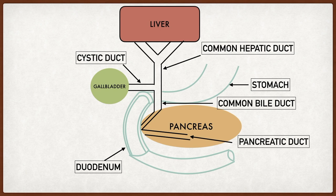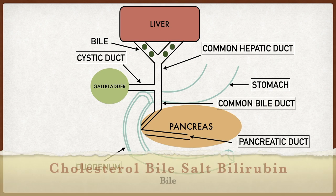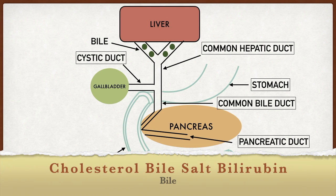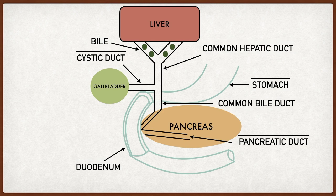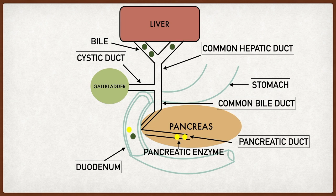Now that we understand the anatomy, let's talk about bile. The liver produces bile, which consists of cholesterol, bile salts, and bilirubin, and releases it into the right and left hepatic ducts. The main goal of bile is to help break down food, specifically fats. Some bile travels through the hepatic ducts, through the common bile duct, and empties into the duodenum to help digest food. The pancreas also releases pancreatic enzymes through the pancreatic duct, and together bile and pancreatic enzymes help break down food content entering the duodenum.